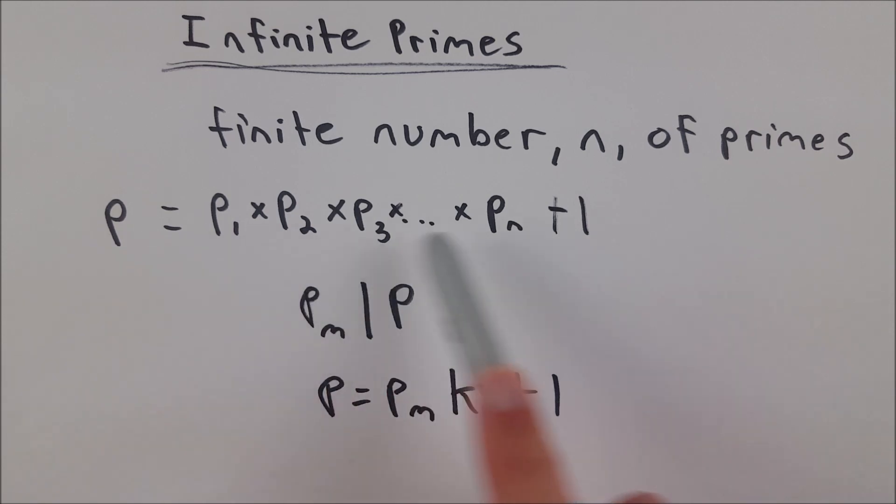However, because of how we defined P, we know that P is one greater than a multiple of any single one of our primes. Therefore, by definition of divides, p sub m does not divide P, because P is equal to one greater than a multiple of any prime that we have.